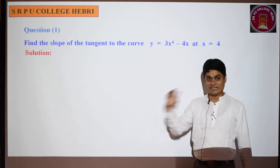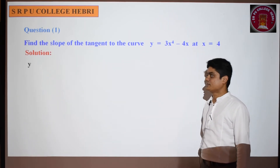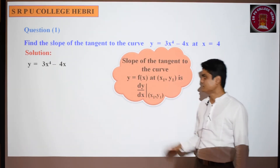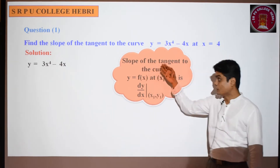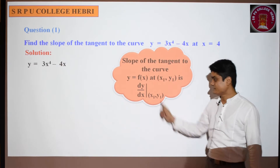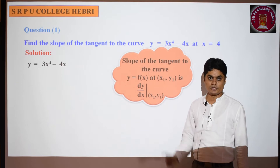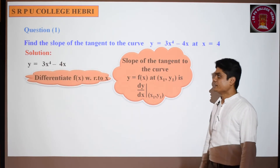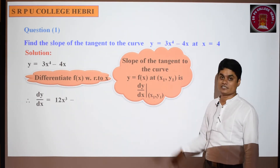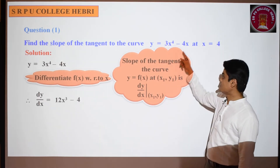Try it based on the last example. First, differentiate. The differentiation of 3x⁴ is 3 × 4x³ = 12x³. The differentiation of 4x is 4. So dy/dx = 12x³ - 4. Differentiation is done.